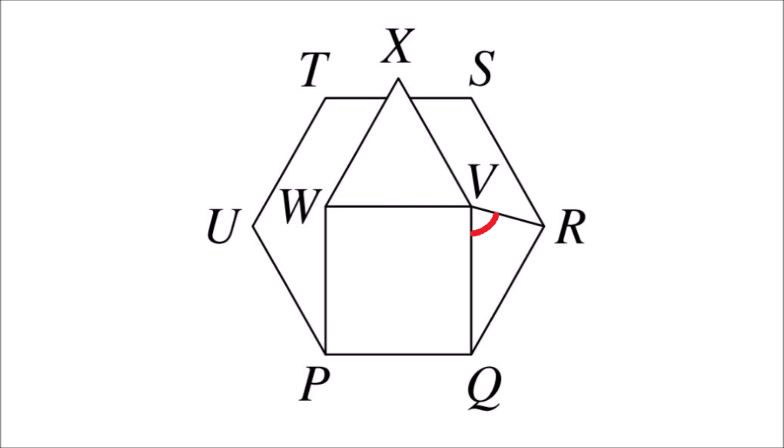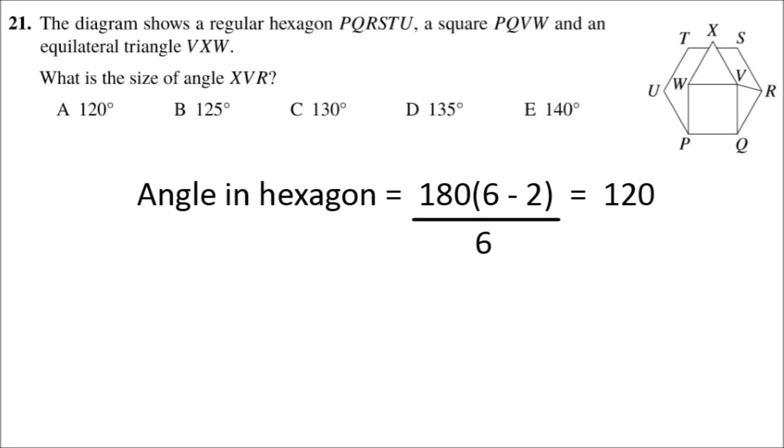To find the angle QVR we first need to find the angle VQR. So the angle VQR is going to be the angle inside the hexagon minus the angle inside the square, and we know the angle in the square is 90 degrees. If we find the angle in the hexagon, that will be 120 degrees, and so 120 take 90 gives us 30 degrees.